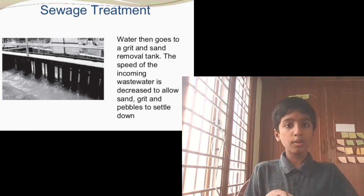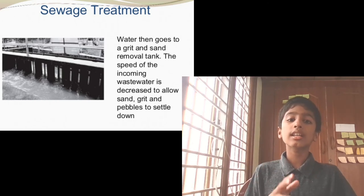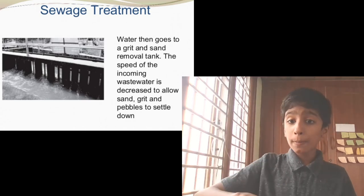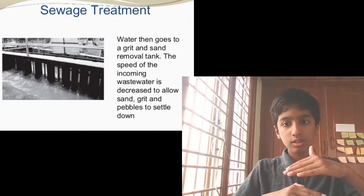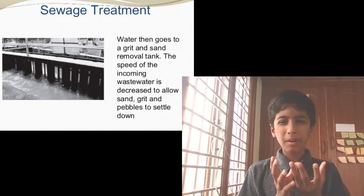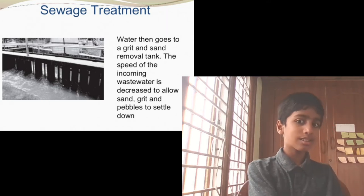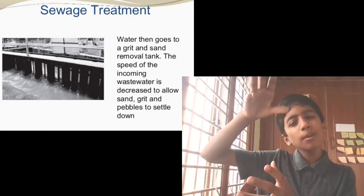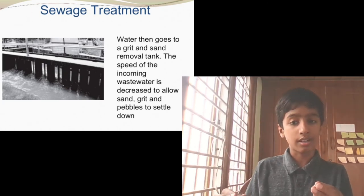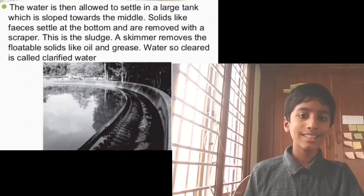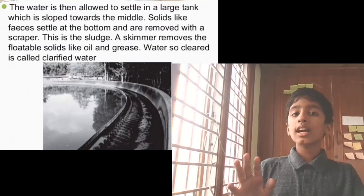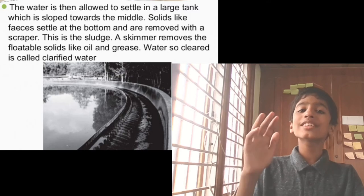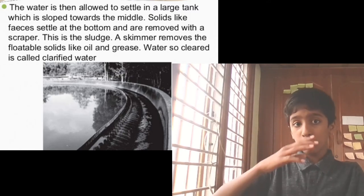In the grit and sand removal tank, the speed of incoming wastewater is decreased to allow sand, grit, and pebbles to settle down — this is sedimentation and decantation. Like muddy water left in a glass: heavier particles settle down, then we slowly pour off the clear water. The water is then allowed to settle in a large tank sloped towards the middle, where solids settle at the bottom and are removed with a scraper.